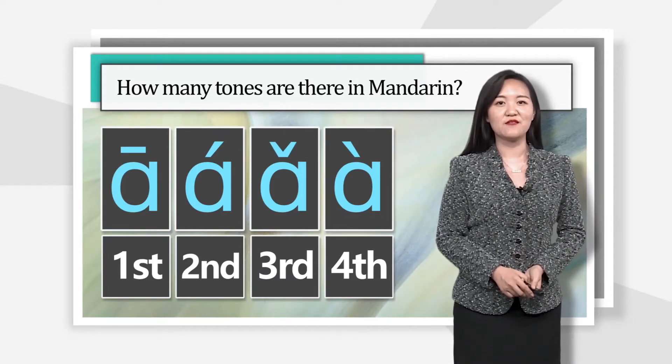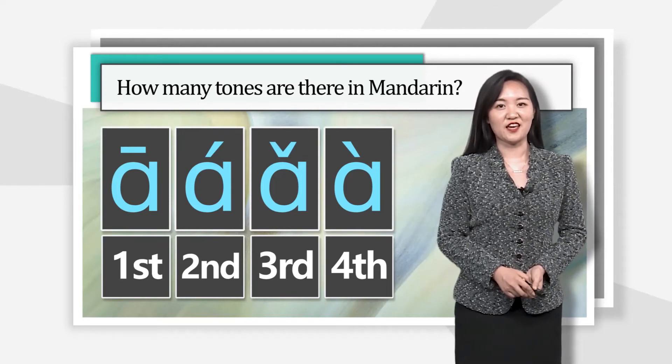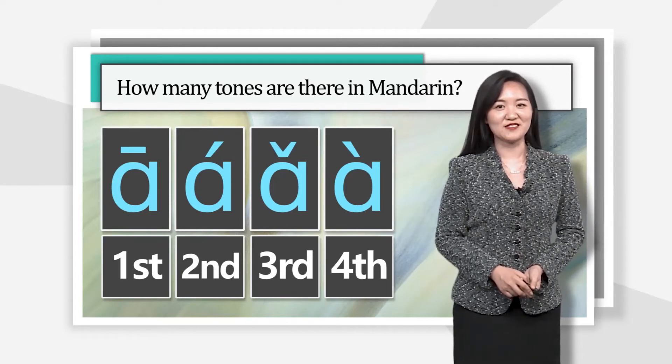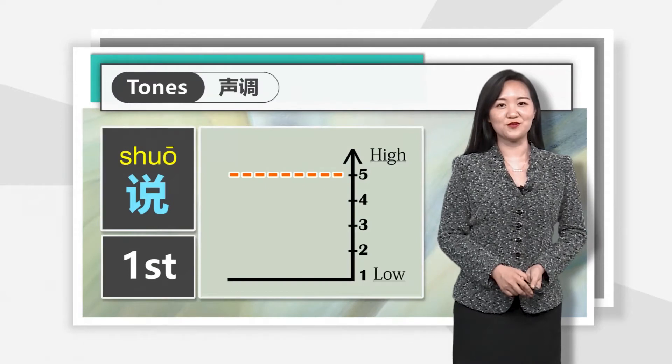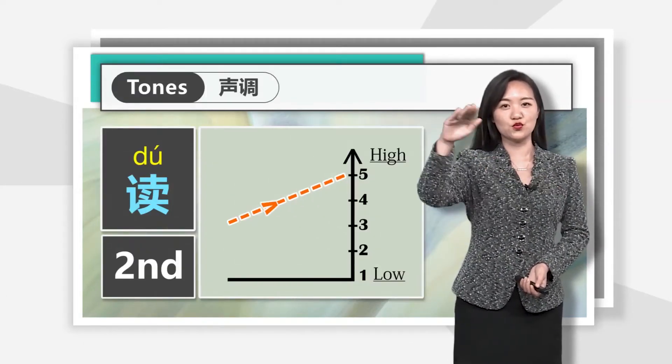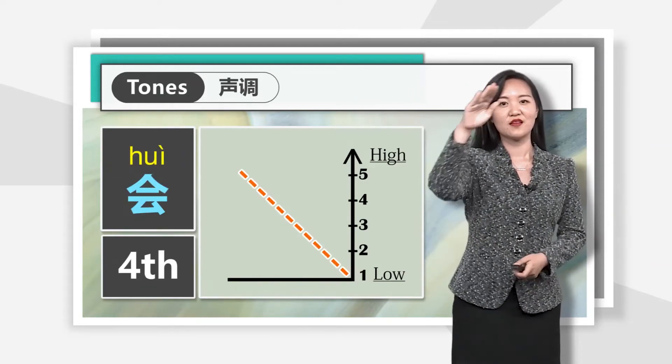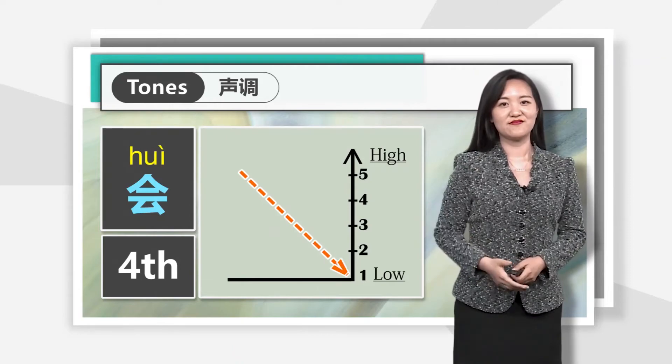Now let's review all the four tones together. You can use gestures to help you recognizing the tones. Follow me: 说, 读, 写, 写. Excellent.